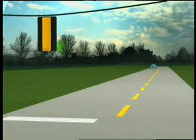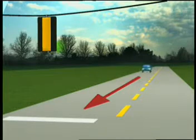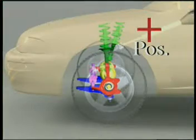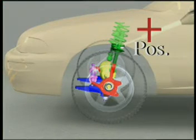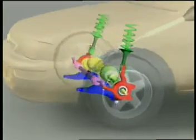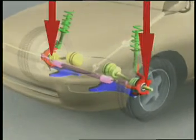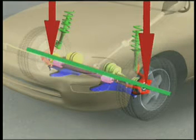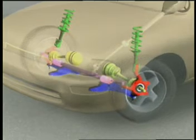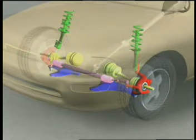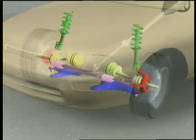Caster is often used to enhance straight line stability. A positive angle is normally specified for this purpose. With positive caster, vehicle weight on each spindle helps hold them in a straight-ahead position. When the wheels are steered, this same load helps push the spindles back to straight-ahead.